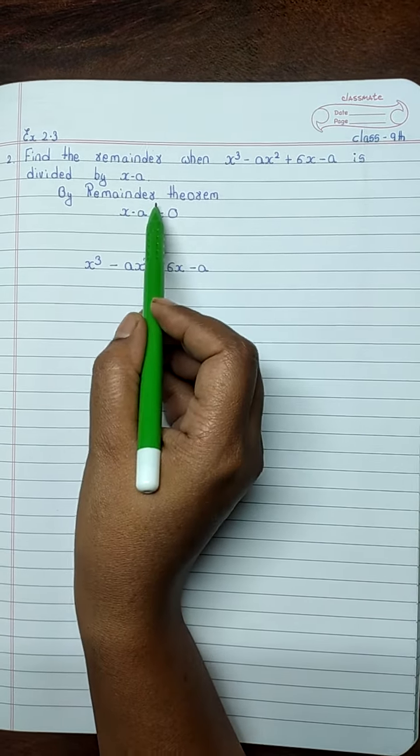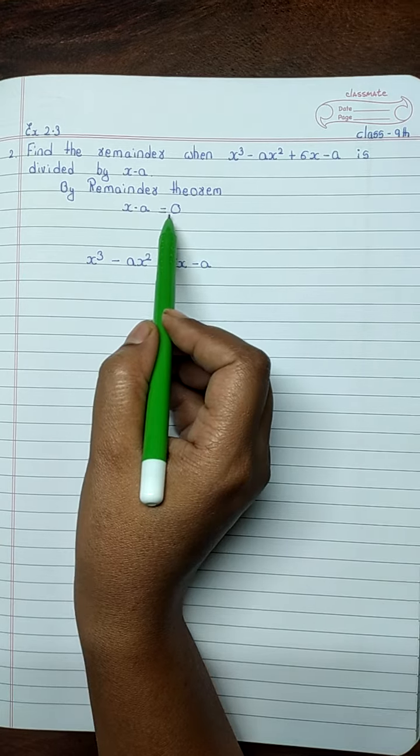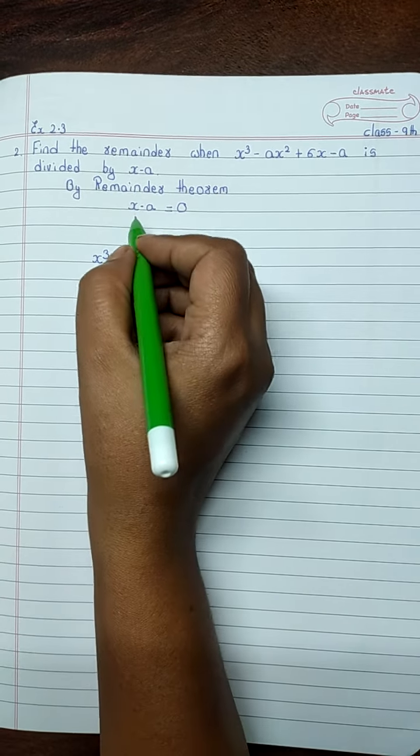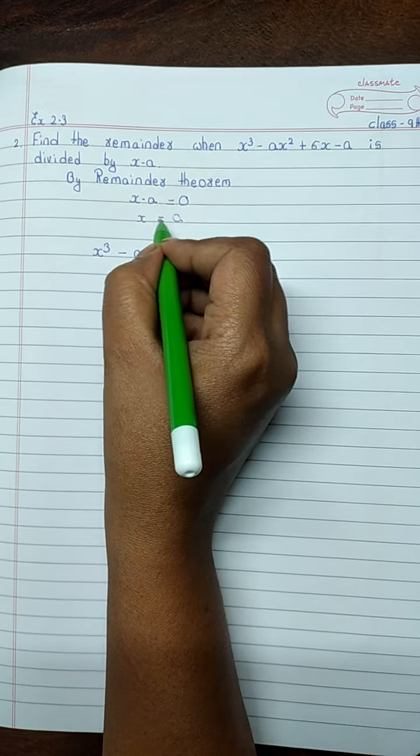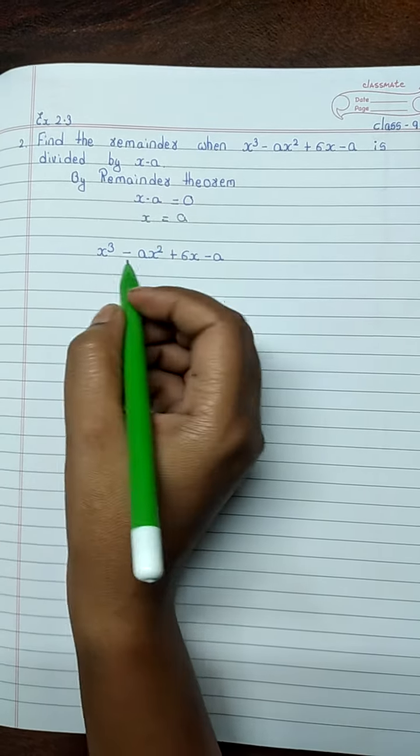Now, by remainder theorem, x minus a equals 0. x will become positive a, so x equals a.